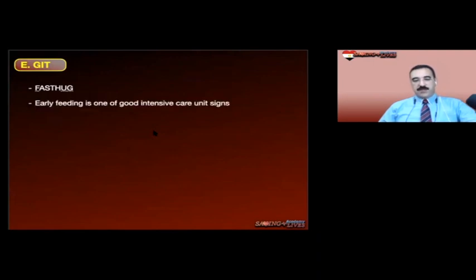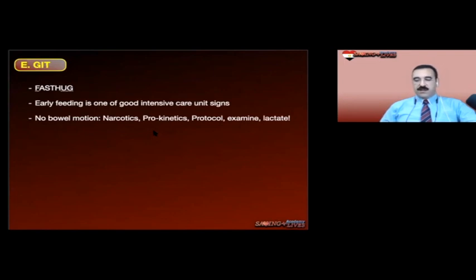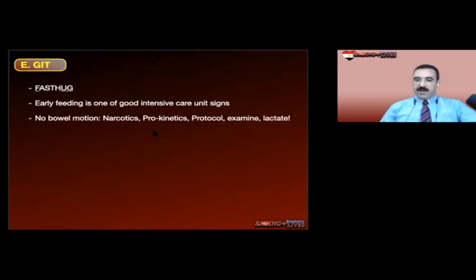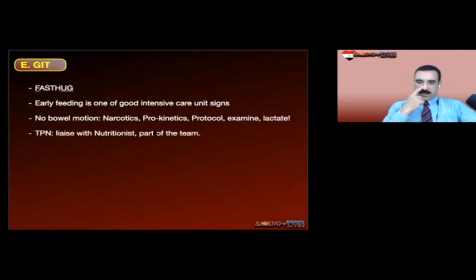GIT: three elements of FAST HUG relate to GIT — feeding, ulcer prophylaxis, and glucose control. Early feeding is one of the hallmarks of good intensive care. If no bowel motion, first suspect narcotics then add prokinetics per hospital protocol. Always examine the patient and look at lactate — discuss with the surgeon if no bowel motion for several days. If lactate is rising, consider CT abdomen with IV contrast to rule out ischemic bowel. TPN requires a nutritionist in your team — part of the multidisciplinary approach.